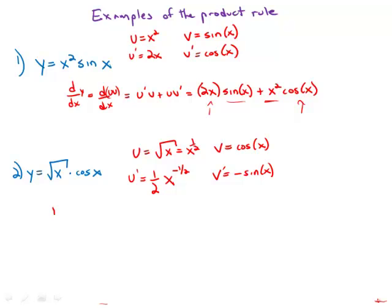So now again the derivative of y is the derivative of this product u times v, and of course that is u prime v plus u v prime. And so this is 1 half x to the negative 1 half times cosine x plus square root of x times negative sine x.